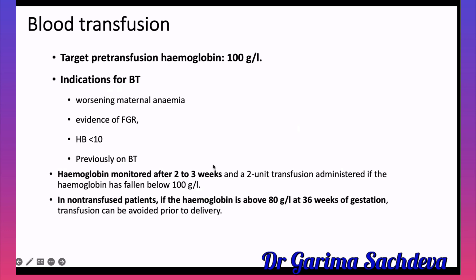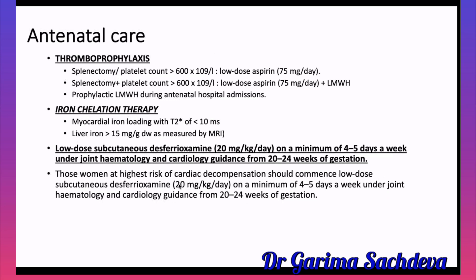Hemoglobin should be monitored every two to three weeks; a two-unit transfusion is given if hemoglobin falls below 10. If the patient has reached 36 weeks and hemoglobin is above 8, transfusion can be deferred until after delivery.